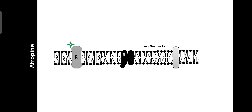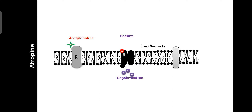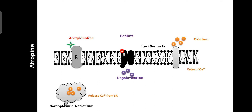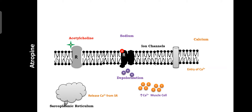Regarding atropine, it is an antagonist of acetylcholine. Acetylcholine is released from the synaptic vesicles and binds on the nicotinic receptors, cholinergic receptors, or muscarinic receptors, and opens the sodium channels. Due to entry of sodium inside the cell, it causes depolarization. Then depolarization is responsible for entry of calcium, as well as release of calcium from the sarcoplasmic reticulum. Like that, the calcium concentration is increased in the muscle cells, and increased calcium concentration causes skeletal muscle contraction.